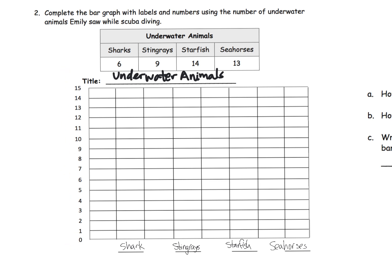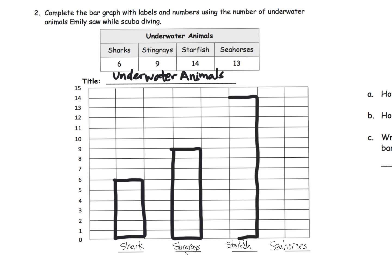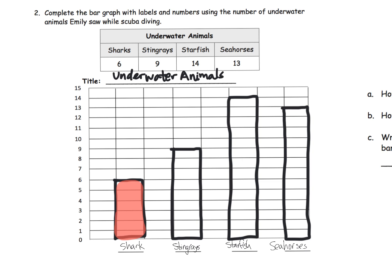Now we're going to graph. We can see that we have six sharks, so it's going to go right up to here. We have nine stingrays, so it goes right there. We have 14 starfish, so that goes way up there. And lastly, we have 13 seahorses, and that goes right there. Of course, we should always make our bar graphs look nice and pretty. So here we go.